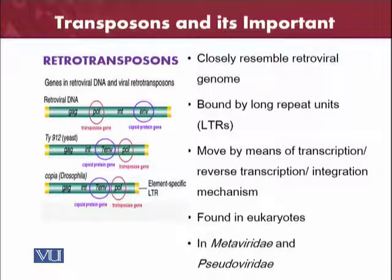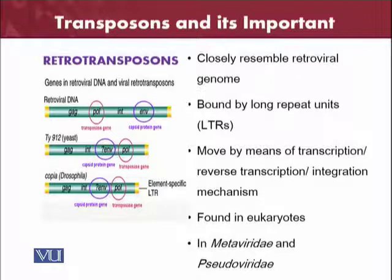As you can see in the figure provided, the genes in the retroviral DNA and viral retrotransposons: the retroviral DNA has GAG proteins, pol proteins, and envelope proteins, with internal regions in between them. Similarly, there are examples from yeast and Drosophila — two examples for retroviral retro transposons.